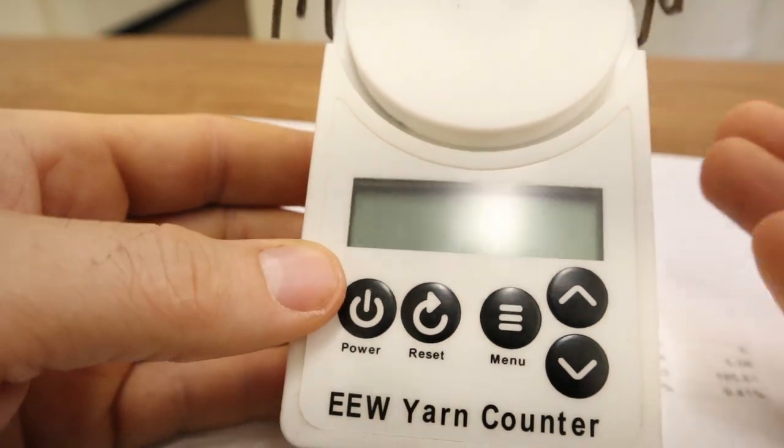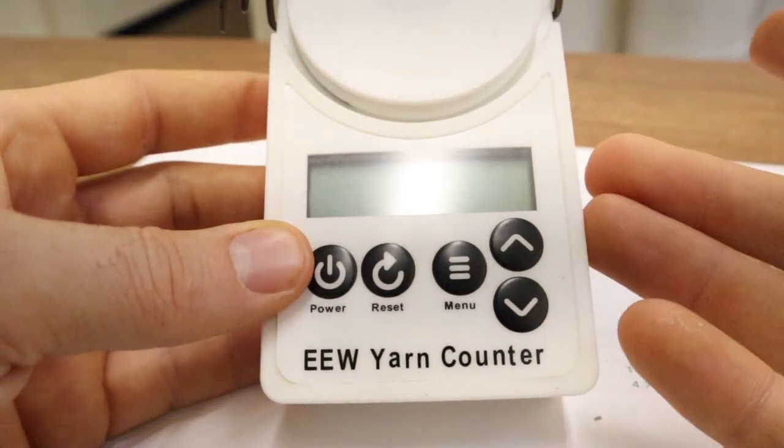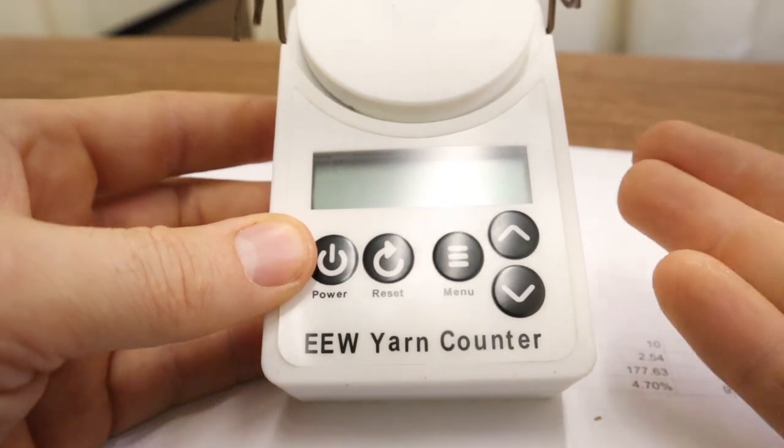Or I could add this other menu option so that you could enter in an approximate wraps per inch for your yarn, and I could reduce it. It wouldn't be zero error, but it would be better than any other yarn counter that I know of in the hobbyist market.